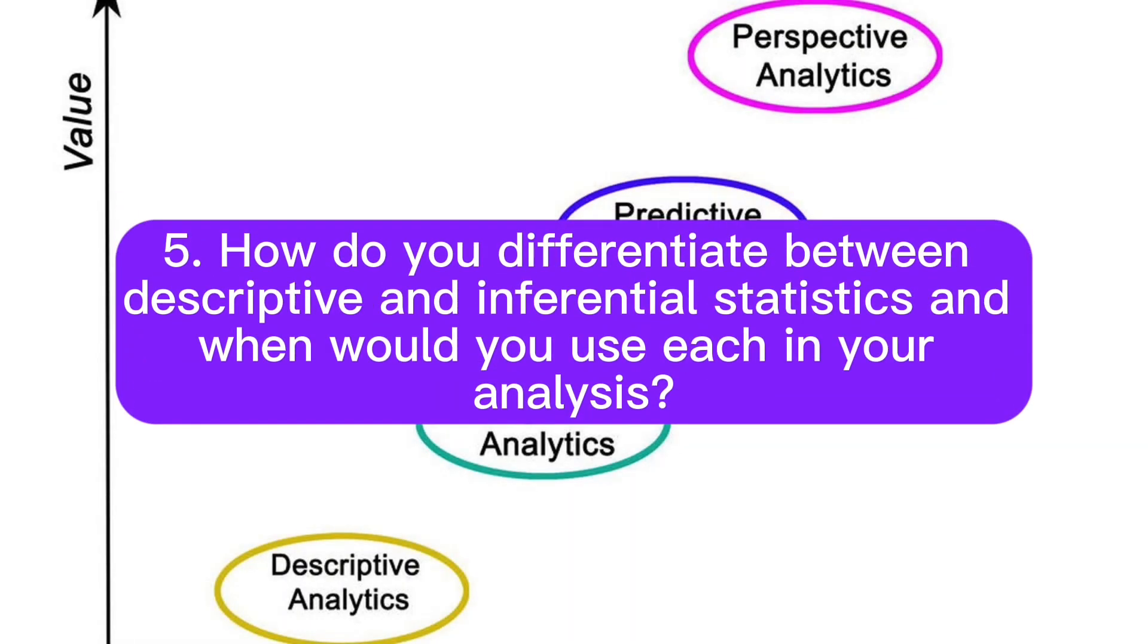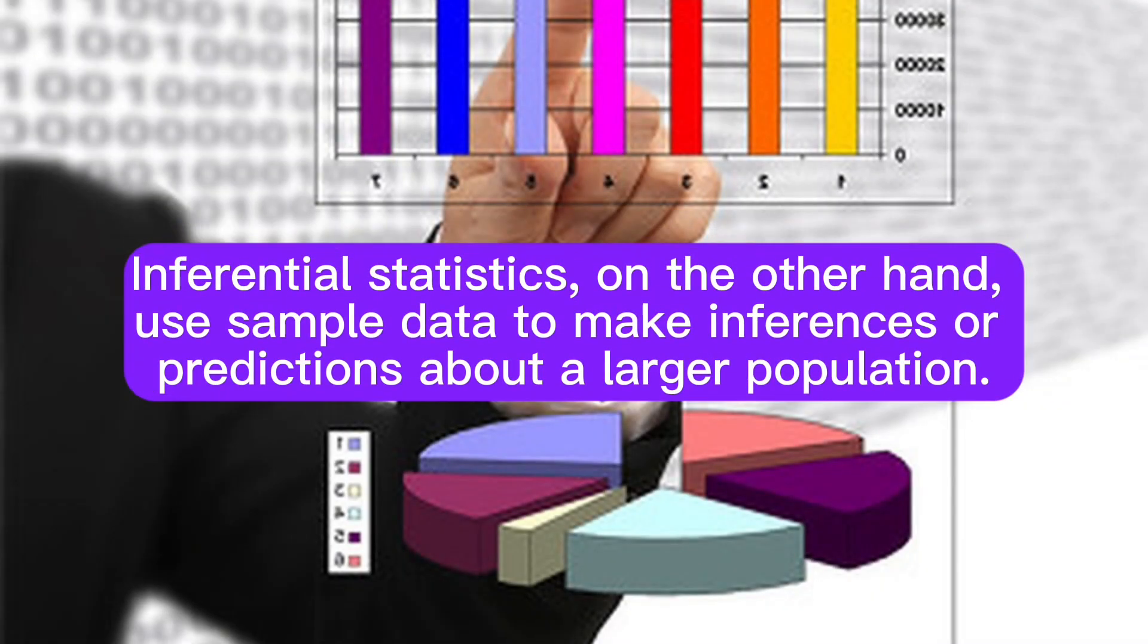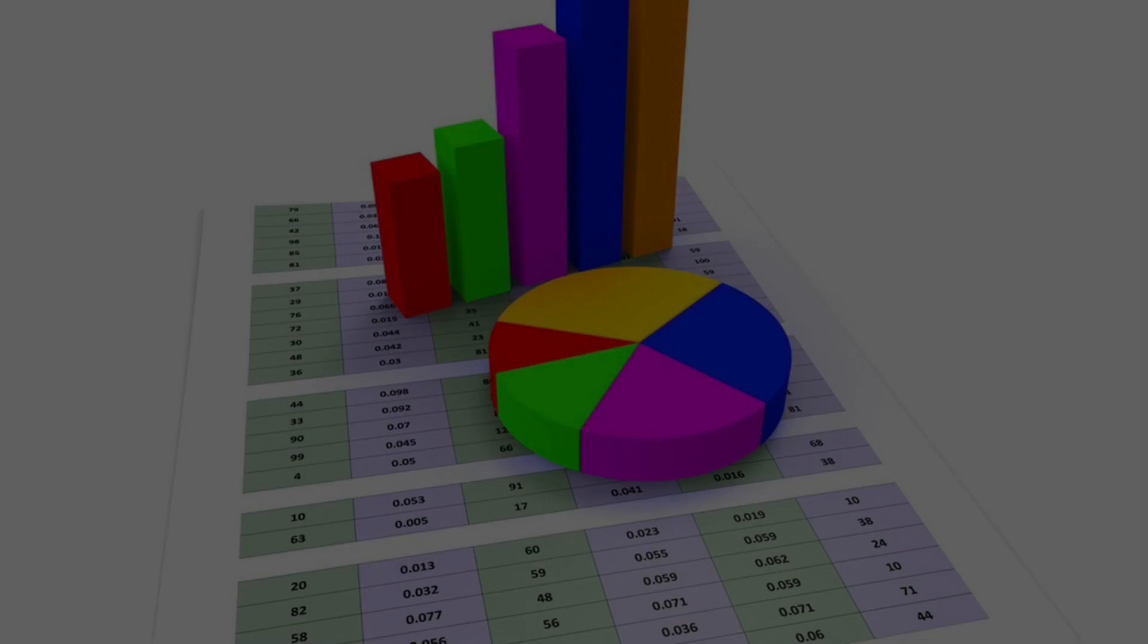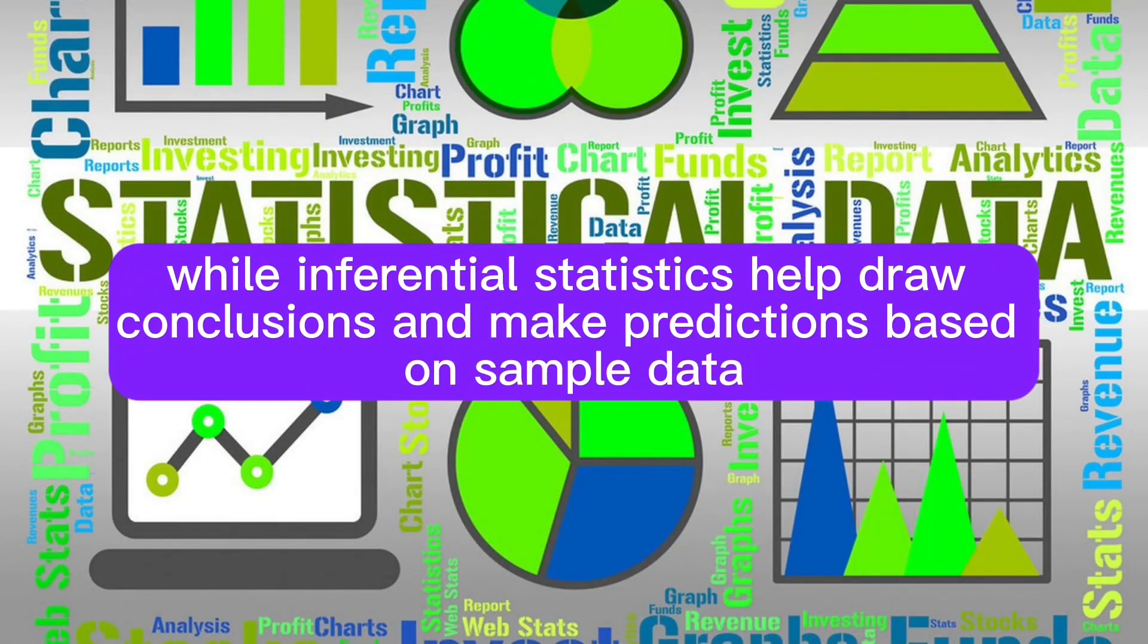Question 5: How do you differentiate between descriptive and inferential statistics, and when would you use each in your analysis? Answer: Descriptive statistics involve summarizing and describing data using measures like mean, median, and standard deviation. Inferential statistics, on the other hand, use sample data to make inferences or predictions about a larger population. Descriptive statistics are used to understand and present data, while inferential statistics help draw conclusions and make predictions based on sample data.